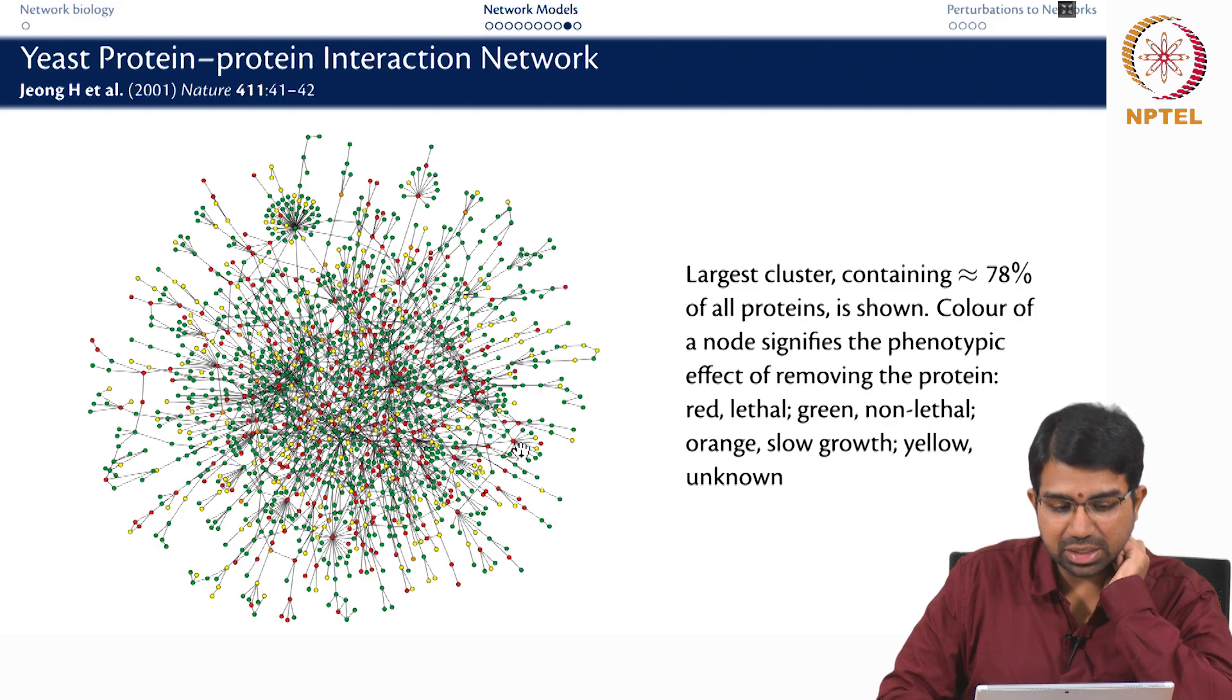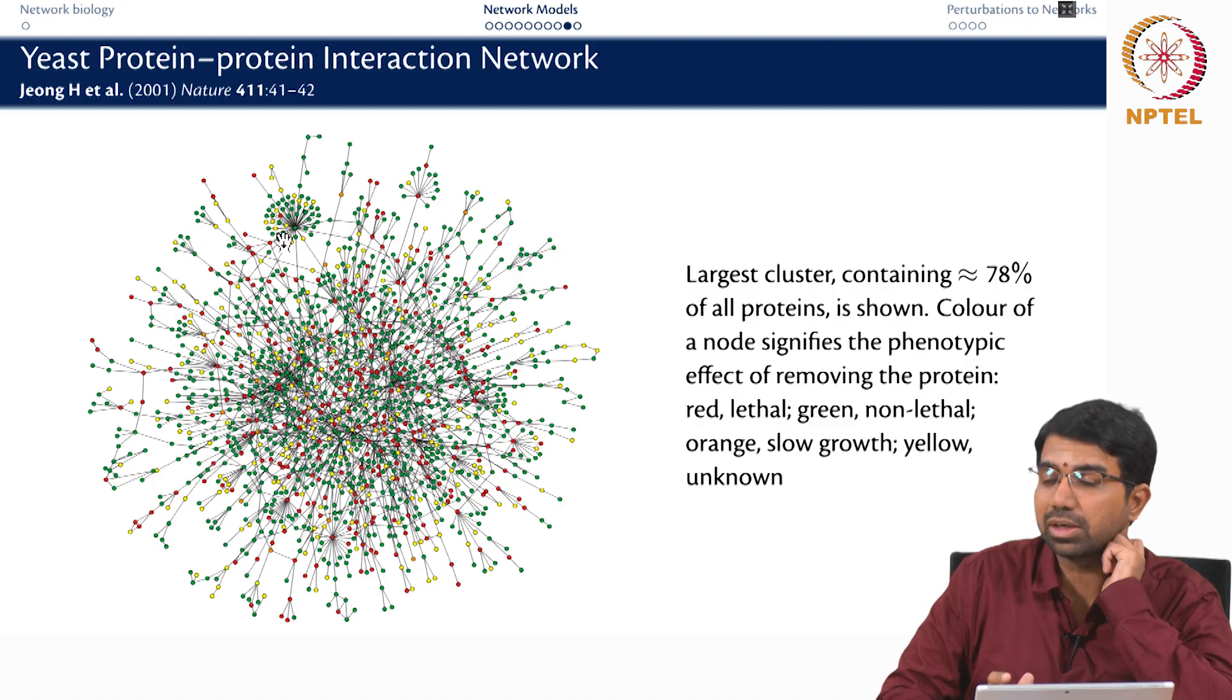This is the yeast protein-protein interaction network, experimentally derived, and every node has a particular color. If a node is colored red, it means the removal of that protein from yeast causes the yeast to die, so it is a lethal deletion. If a node is colored green, it is non-lethal. If a node is colored orange, it is a slow grower, and if a node is colored yellow, we do not have experiments that tell you what happens when you delete the node.